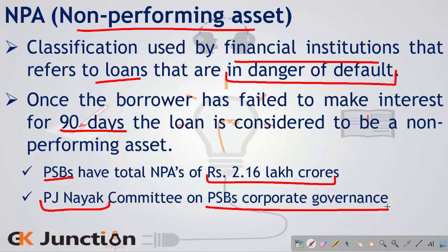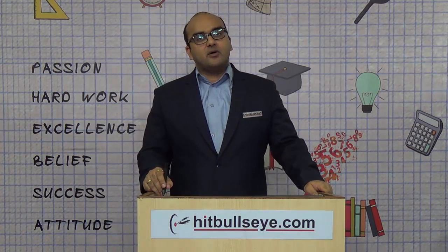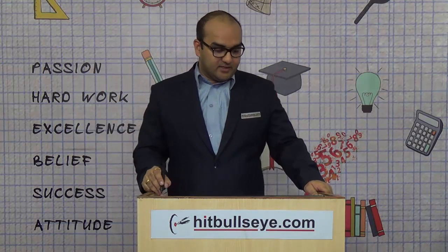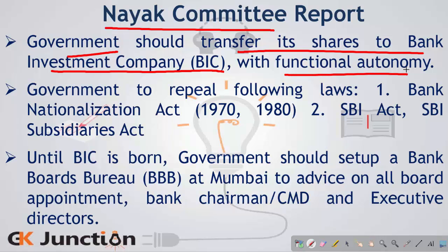The P.J. Nayak Committee was formed to reform the corporate governance structure of public sector banks in India to bring down the levels of NPAs. The committee understood that because the government of India is the majority stakeholder of public sector banks, it is leading to a lot of political interference. It recommended that the government should transfer its shares to another company — the Bank Investment Company — with functional autonomy. The entire shares of the government of India should be transferred to this new Bank Investment Company.